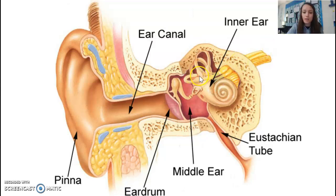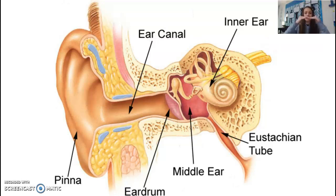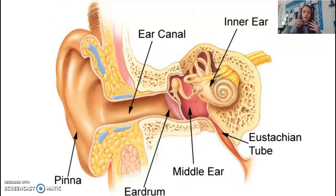The semicircular canals deal with your sense of balance, called the vestibular sense. They are fluid-filled tubes that work like a level — similar to the bubble level used to check if something is straight. Your body uses the movement of that fluid to understand whether you are upright or moving, and that sensation is sent to the brain.